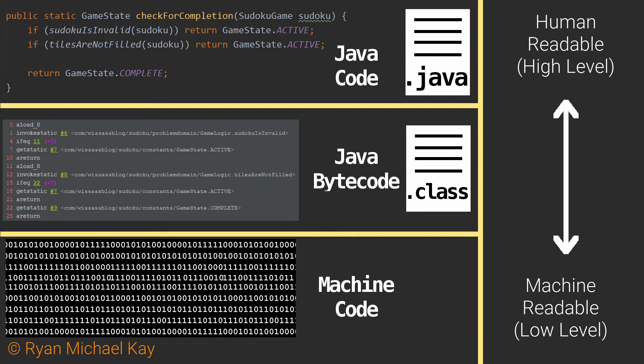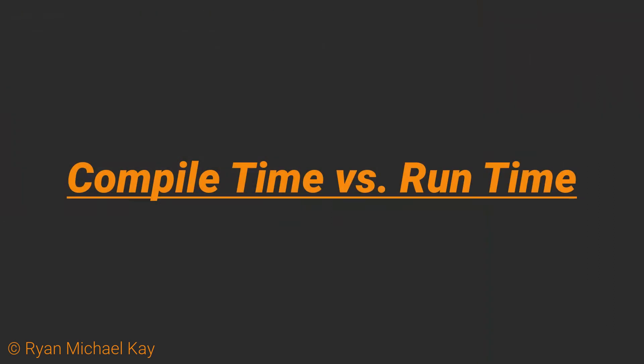What we just talked about explains what happens just before an application is deployed, and we refer to that timeframe as compile time in an application's lifecycle. Now we will talk about the timeframe when an application is actually running on a computer, which we call runtime.